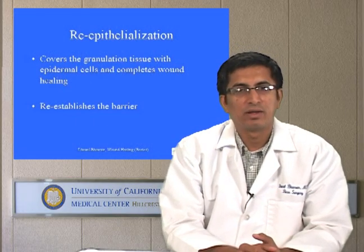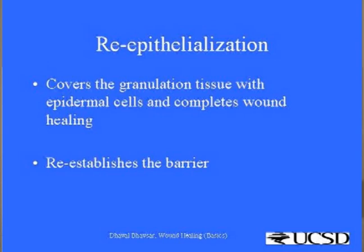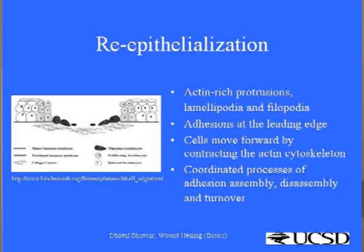Re-epithelialization is the eventual event in the proliferation phase. It includes coverage of granulation tissue with epidermal cells and completes acute wound healing. It re-establishes the barrier and re-establishes protection against infection, thermal regulation, and sensation. Re-epithelialization includes migration of epithelial cells from the margins of the wound. Cells of the basal layer of the epidermis duplicate and send new keratinocytes toward the center of the wound, which migrate and stop due to contact inhibition once they reach the other side.